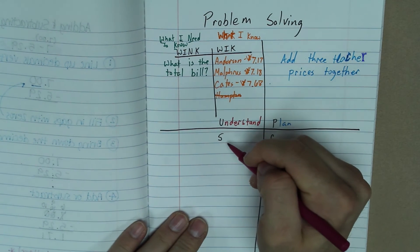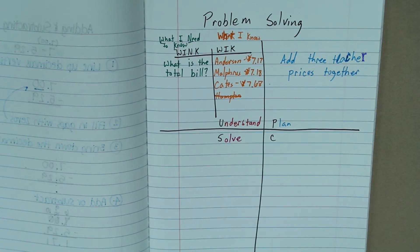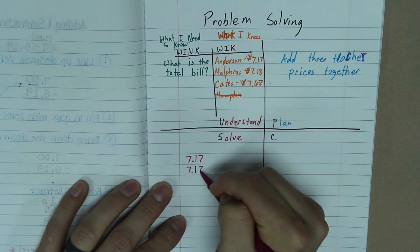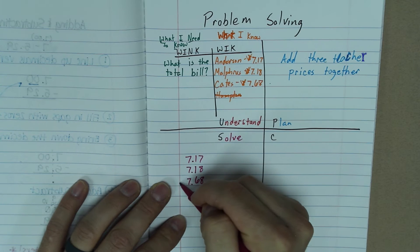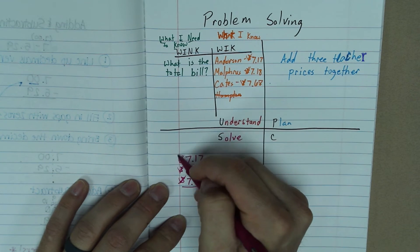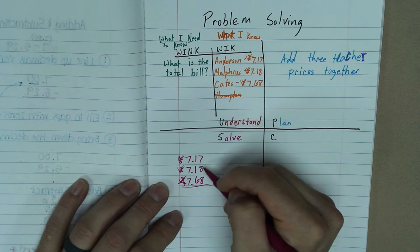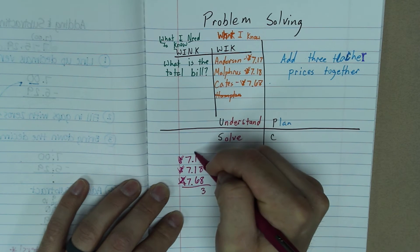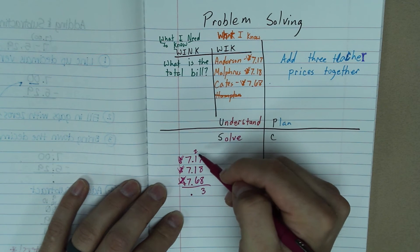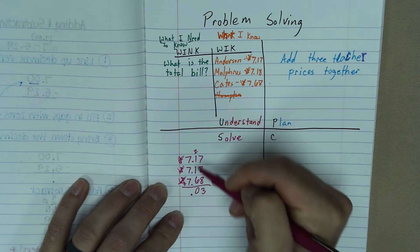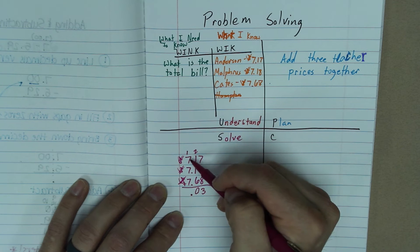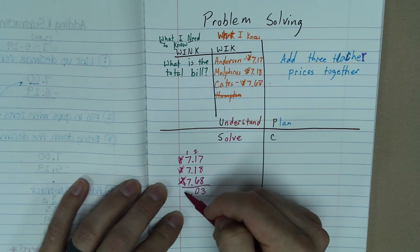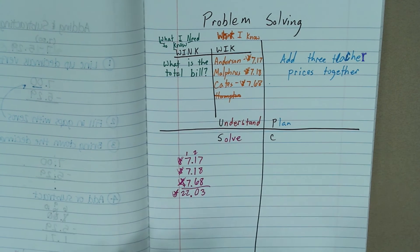Now let's go ahead and solve. So I'm going to solve this. And so I'm going to add these three prices together. Add them. So 7 plus 8 is going to be 15. 15 plus 8 is going to be 23. So I'm going to carry that 2. And bring down the decimal. Sorry, I forgot to do that. 2 plus 1 plus 1 is 4. 4 plus 6 is 10. Carry the 1. 1 plus 7 is 8. 8 plus 7 is 15. 15 plus 7 is 22. So $22 and 3 cents is going to be our total.